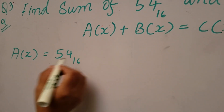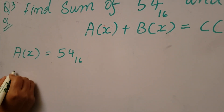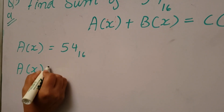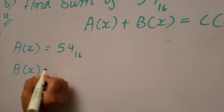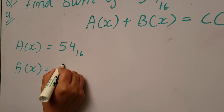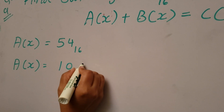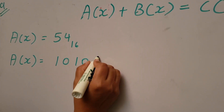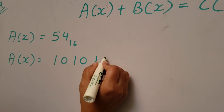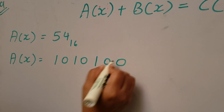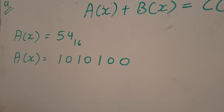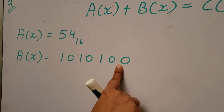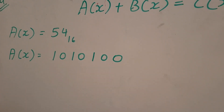Let's change 54 into binary: 1, 0, 1, 0, 1, 0, 0. Now let's change this binary into a polynomial.